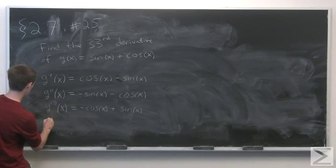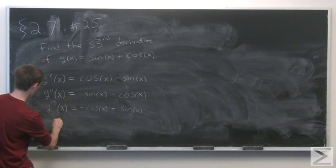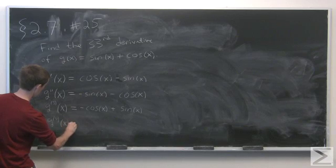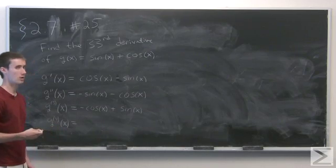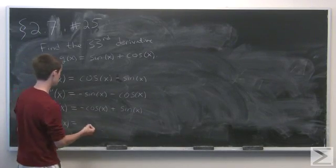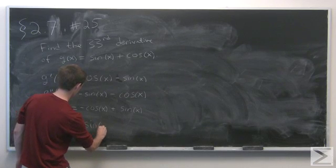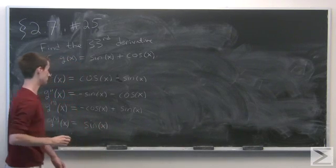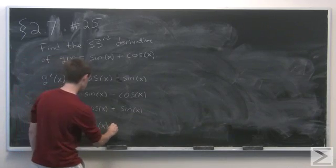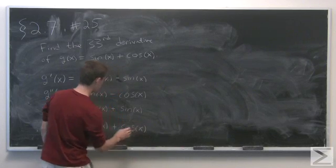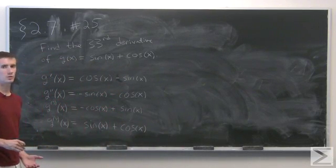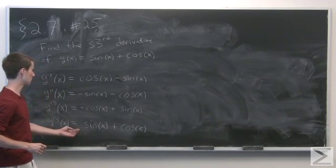If we compute the fourth derivative, we get minus the derivative of negative cosine of x, which is minus negative sine of x, so positive sine of x plus cosine of x. This is exactly what we started with.